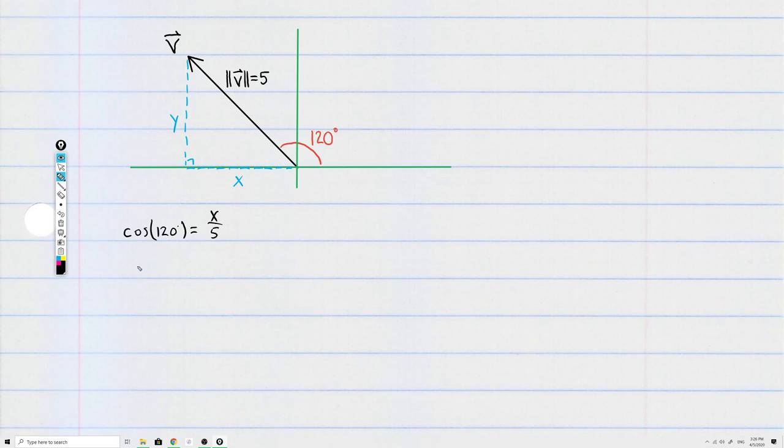And then if you solve for x, you get x equals 5 times the cosine of 120. Now since 120 is a nice unit circle angle, we'd know what the value is.